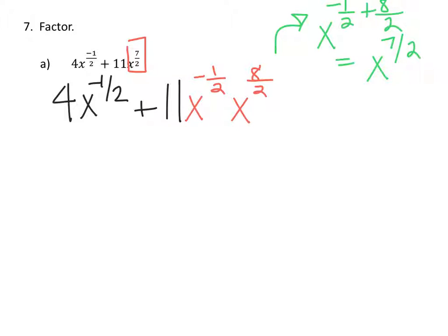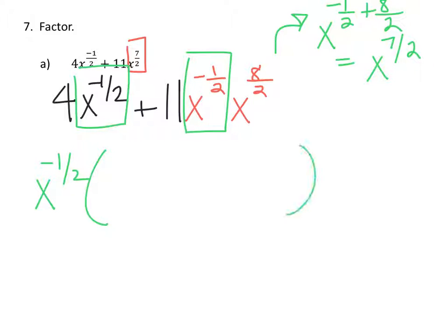Now I can look for the common factor, which is x to the negative one-half. Both terms have that common factor, so I can factor it out and write what remains. The first term leaves 4, since x to the negative one-half times 4 gives 4x to the negative one-half. Then factoring x to the negative one-half from the second term leaves plus 11 times x to the 4, since 8 divided by 2 is 4.